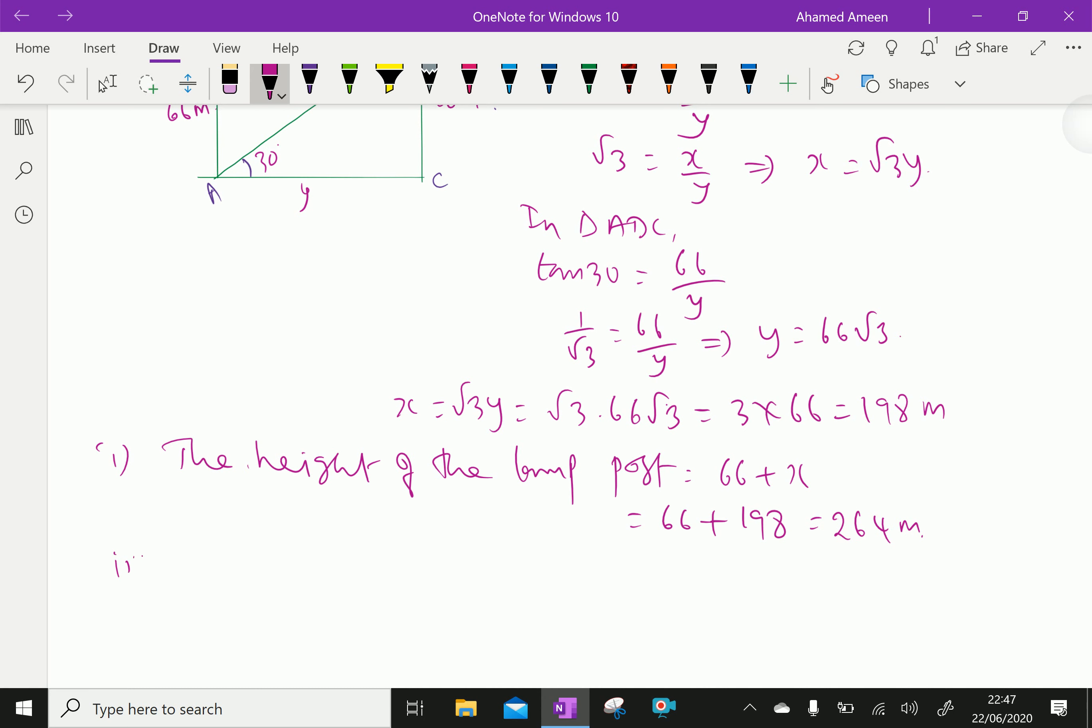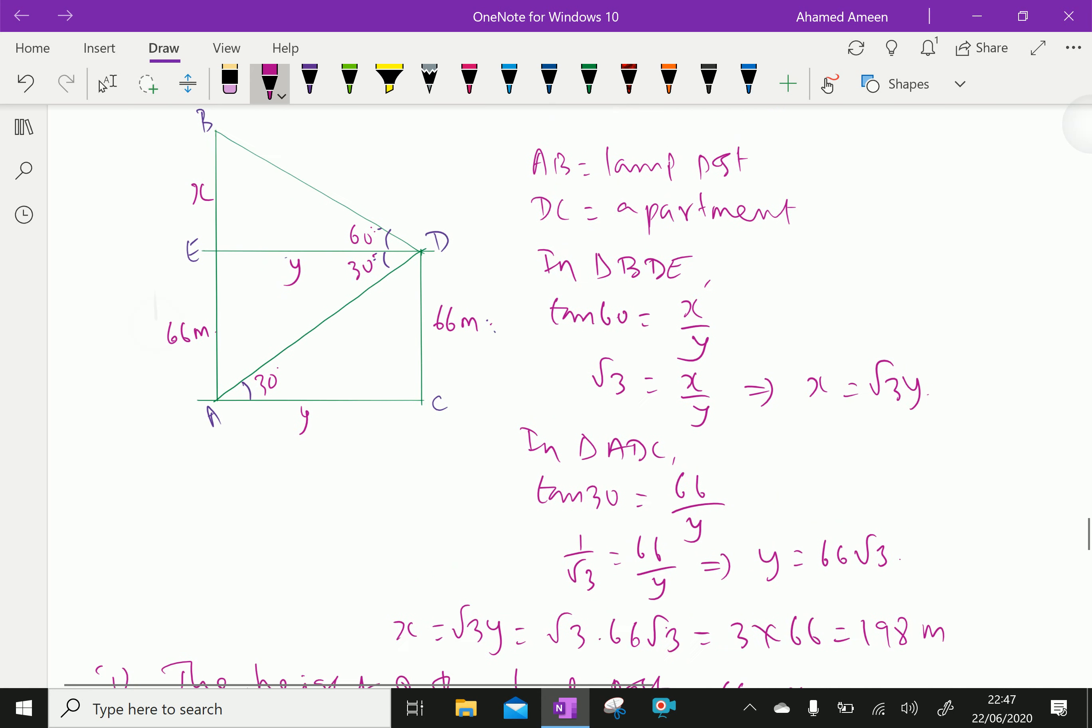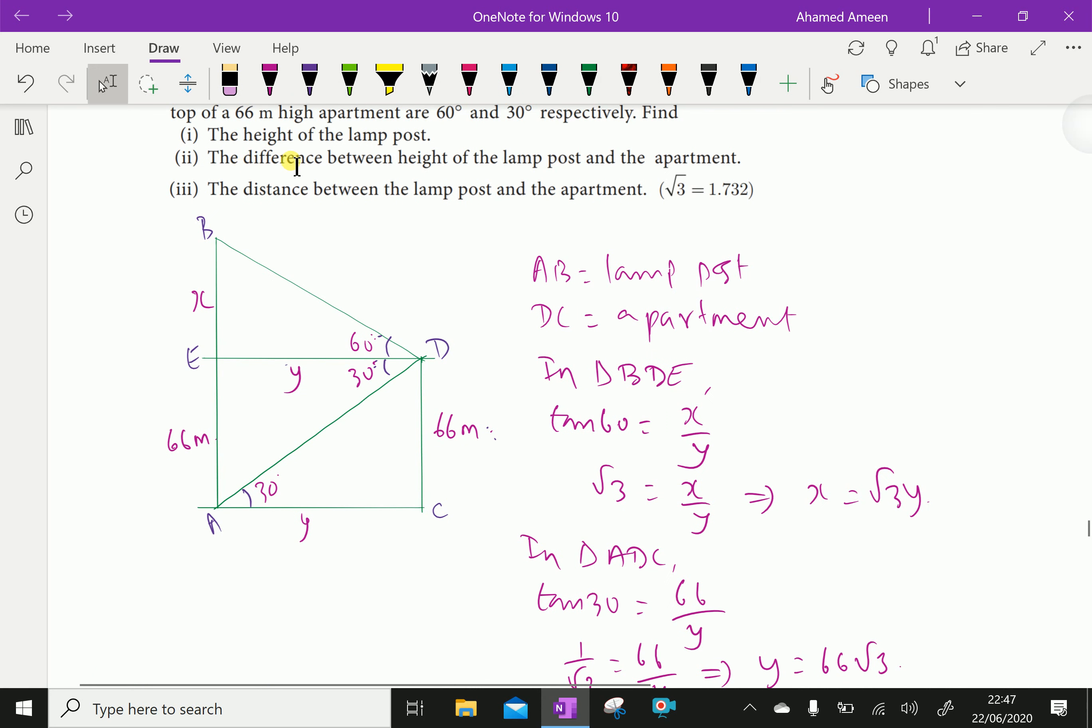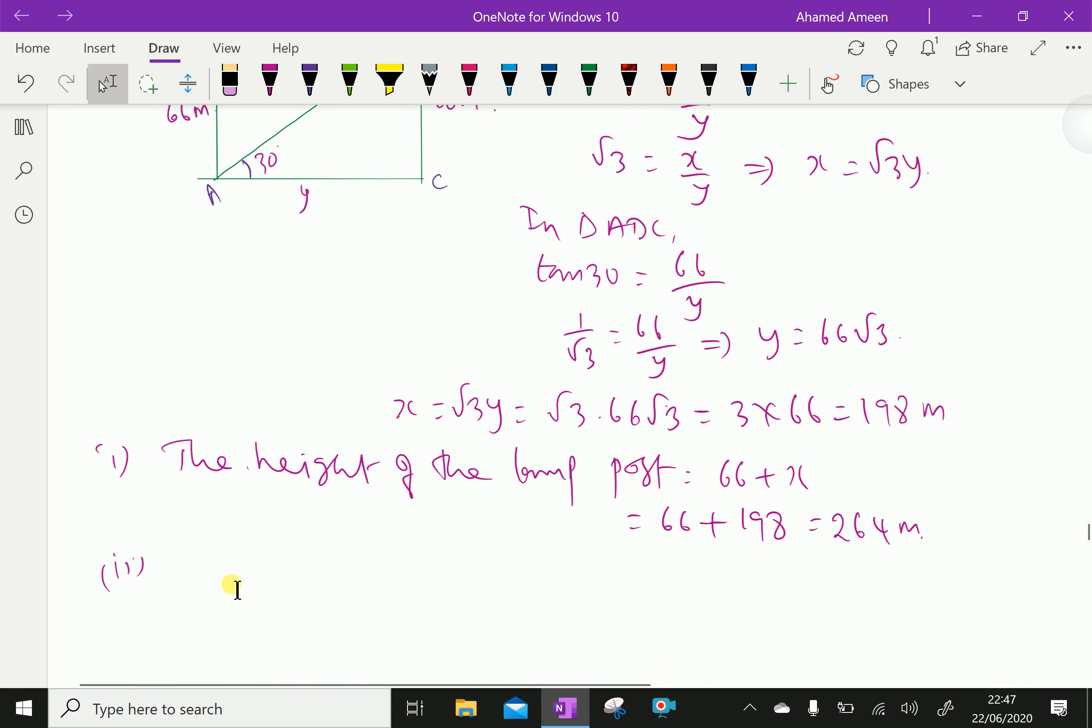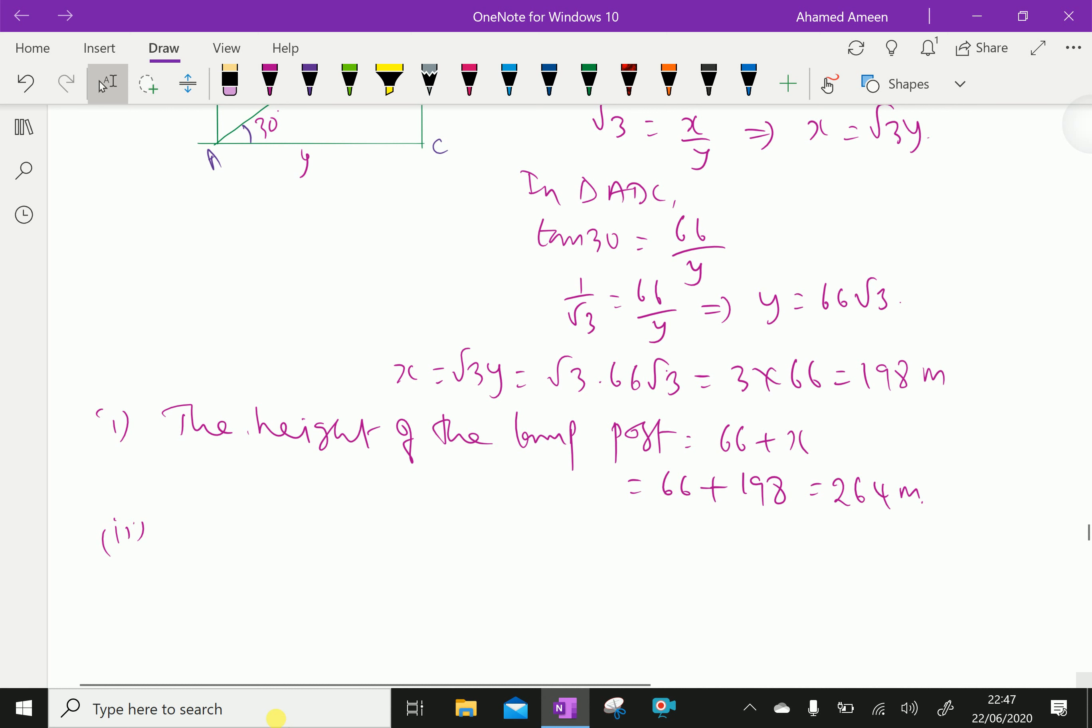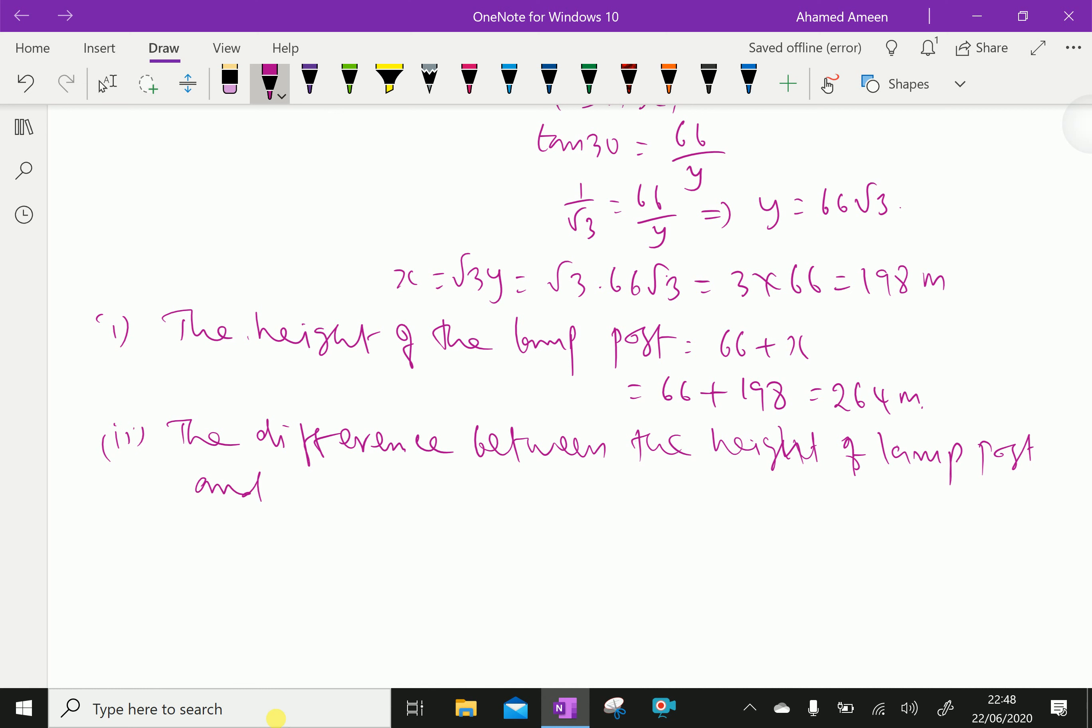The second part: the difference between height of the lamp post and the apartment is X, which equals 198 meters.